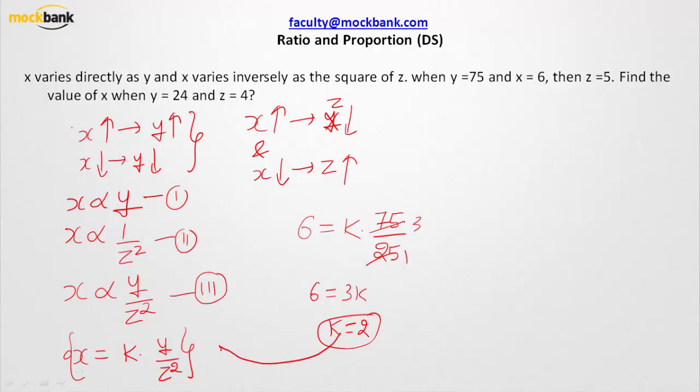Now we have got our proportionality constant. Let us find out this equation once again. This equation will be nothing but x equals 2y over z square is our equation. Now what is the question talking about?